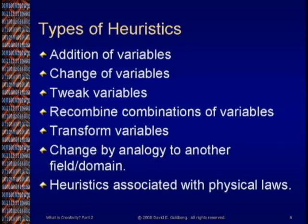Now there are many different types of heuristics. Some add variables, some change variables, some tweak variables, recombine or make combinations of variables, transform them, make analogies, and so forth. There are all kinds of heuristics associated with various physical laws. The idea here is that there are many different rules of thumb that can help a system get from one form to a somewhat improved or different form through some sort of transformation using various kinds of rules or procedures.